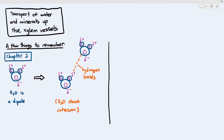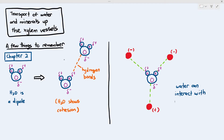Another very important thing to remember is because water has polarity, water can also interact with and bond to other polar molecules, for example minerals. A lot of minerals have charges — like nitrates, which have a slightly negative charge, and phosphates also have a negative charge when absorbed in the roots. Because polar substances like minerals can interact with water, they can dissolve in water. That's why water is referred to as a universal solvent.